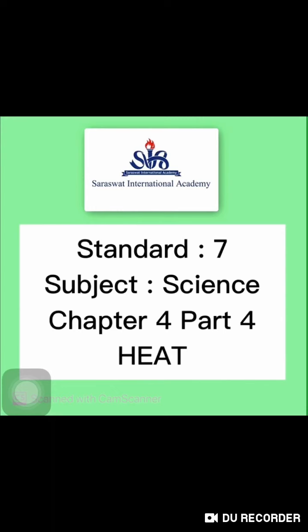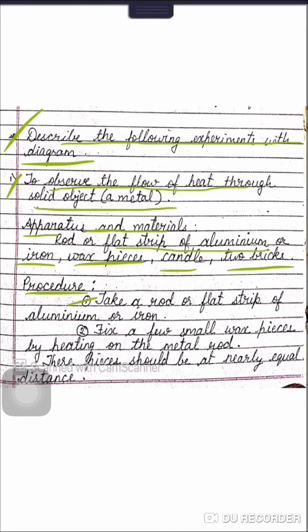Question: describe the following experiments with diagram. First one, to observe the flow of heat through a solid object, a metal. Apparatus and material needed: rod or flat strip of aluminium or iron, wax pieces, candle, two bricks.